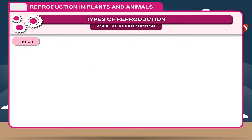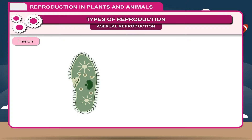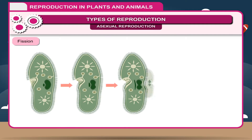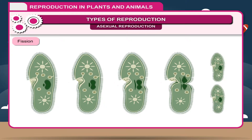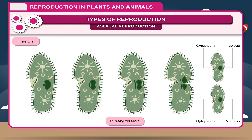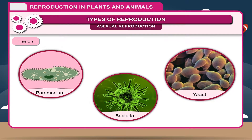Fission. It is a very common method of reproduction in unicellular organisms. Here, an organism divides almost equally into two parts. Nucleus and cytoplasm both divide equally through a septum. It is also called binary fission. For example, paramecium, bacteria and yeast.